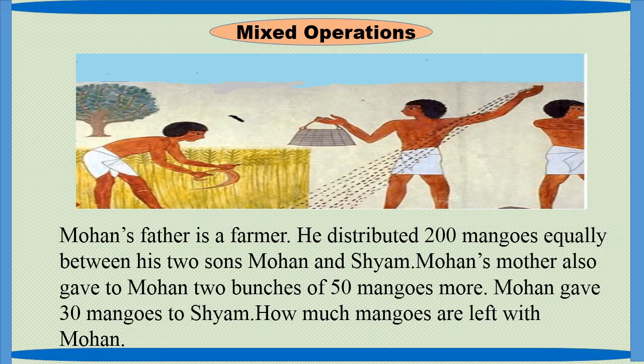Mohan's father is a farmer. He distributed 200 mangoes equally between his two sons Mohan and Shyam. Mohan's mother also gave to Mohan two bunches of 50 mangoes more. Mohan gave 30 mangoes to Shyam. How many mangoes are left with Mohan? This is the problem.